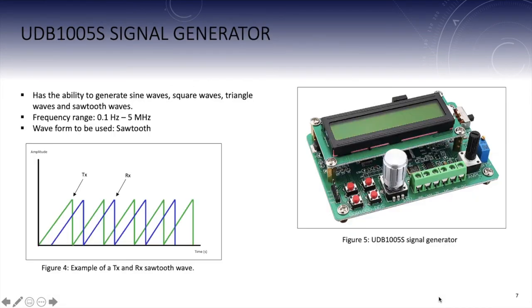A sawtooth wave will be used as the offset between the transmitted and received signals will be much more consistent when compared to a sine wave.